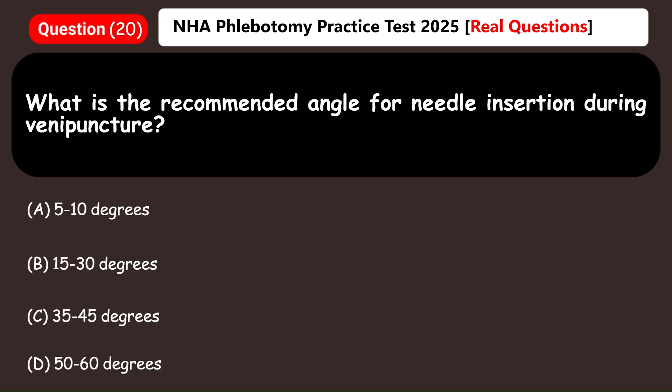What is the recommended angle for needle insertion during venipuncture? A) 5 to 10 degrees, B) 15 to 30 degrees, C) 35 to 45 degrees, D) 50 to 60 degrees. Answer: B) 15 to 30 degrees.